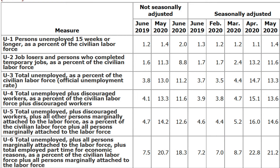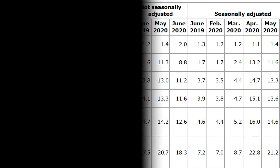Using this information, the BLS calculates several measures of unemployment. The most popular one that is tracked is the U-3 unemployment rate. Economists actually track several measures of unemployment. And that's how the unemployment data is collected.